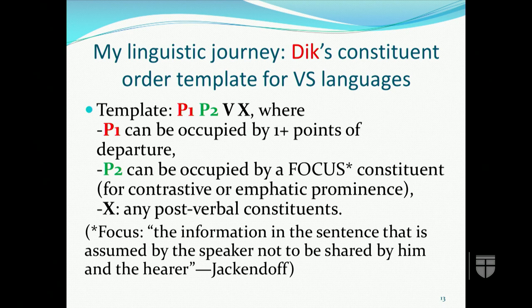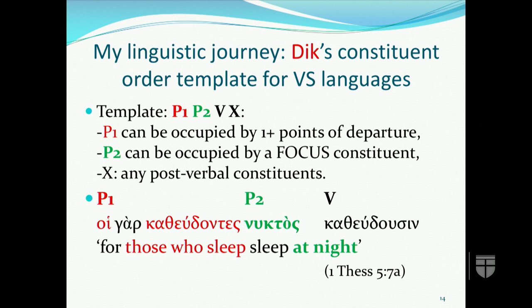1 Thessalonians 5:7 illustrates the P1 and P2 positions. The sentence concerns those who sleep, which is the theme or topic, placed in P1. The rheme or comment about the theme is 'sleep at night,' with the focus being 'nuktos' — at night — which is in P2. P2 would be the most important information in the clause, placed in a position of prominence before the verb. It would have been the most important part of the clause regardless of its location, but it's been brought to the front for prominence sake.